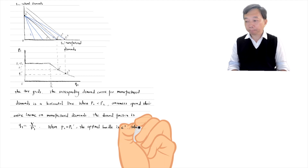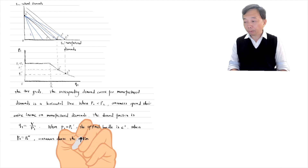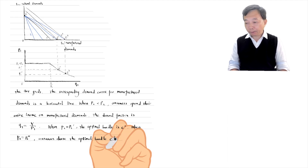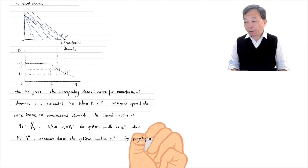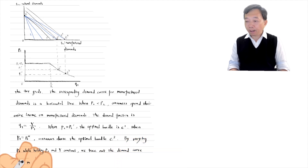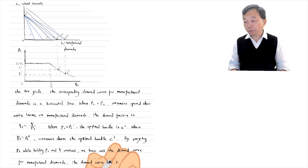We draw the corresponding bundle E2 in the demand diagram. As the price of manufactured diamonds continues to drop to P1'', consumers choose the optimal consumption bundle E3. We can also draw the corresponding point on the demand diagram. By varying the price of manufactured diamonds while holding constant the price of natural diamonds and consumer income, we trace out the demand curve for manufactured diamonds. The demand curve has two kinks.